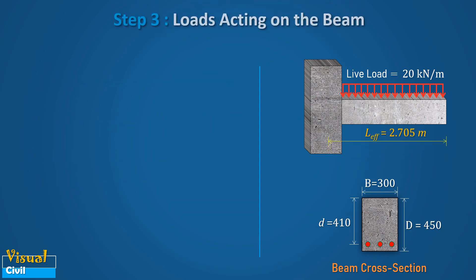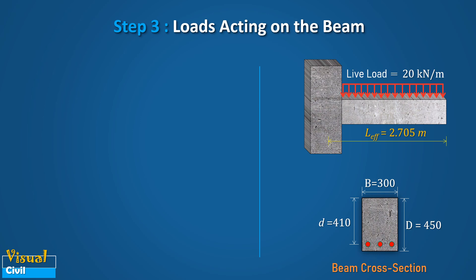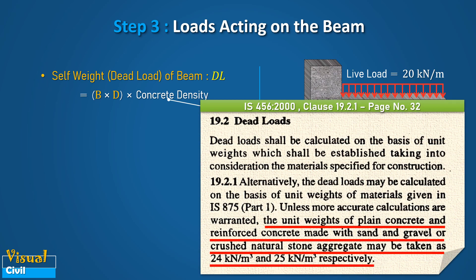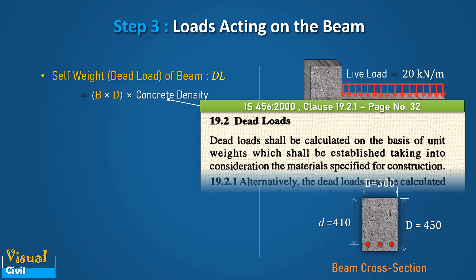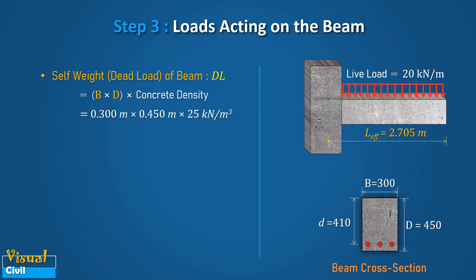In step 3, let us calculate the loads acting on the beam. First, calculate the self-weight or dead load of the beam by multiplying the cross-sectional area of the beam with the concrete density. Considering the concrete density as 25 kN per meter cube by referring to IS 456 clause 19.2.1, and putting in the values of concrete density, width and depth of the beam, we get the dead load of the beam as 3.375 kN per meter.